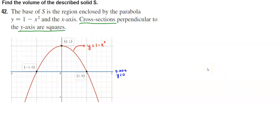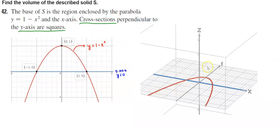Let's take a look at the three-dimensional graph. Here is the y-axis, the x-axis, and the z-axis, which creates that three-dimensional space. We want to take a cross section of this graph — and there we have our square. We're taking multiple cross sections, and the area of each square is side times side.